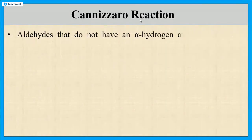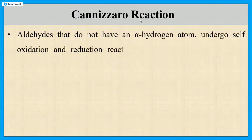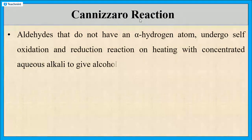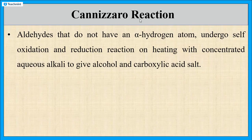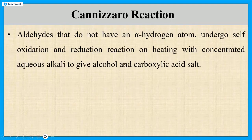Any aldehyde that does not have an alpha hydrogen atom undergoes the Cannizzaro reaction. If it contains an alpha hydrogen atom, then it will not undergo Cannizzaro reaction. In this reaction, any aldehyde that does not contain an alpha hydrogen atom undergoes self-oxidation and reduction on heating with concentrated alkali. One molecule of the aldehyde gets oxidized to a carboxylic acid salt, and another molecule of the aldehyde gets reduced to its corresponding alcohol.